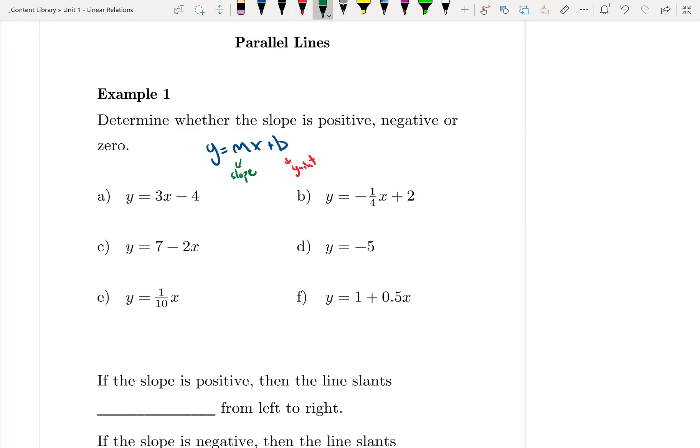If I look at these equations, I see that my slope in this case is positive 3, so that means my slope is positive.